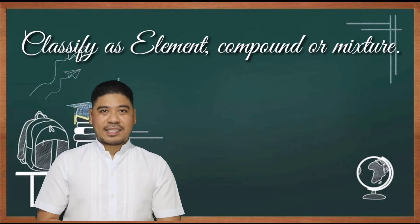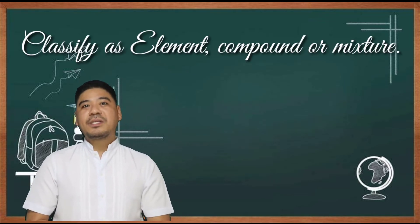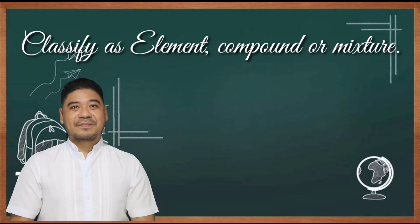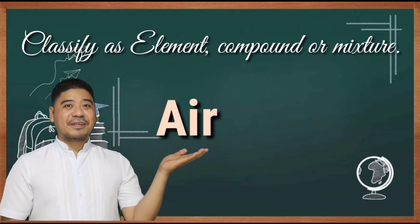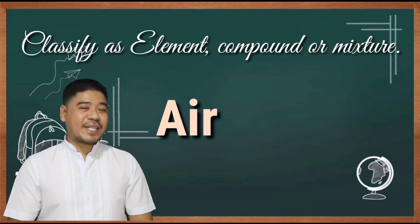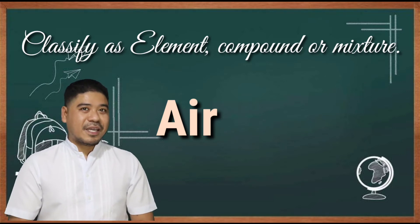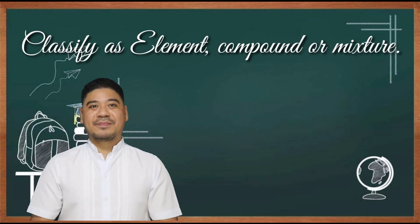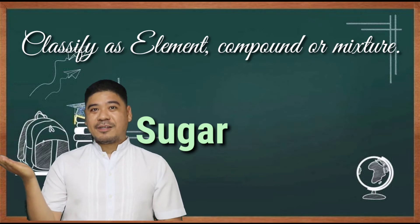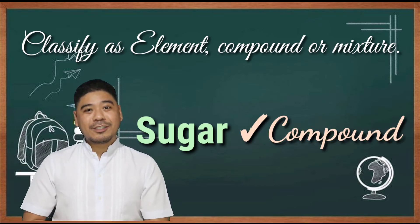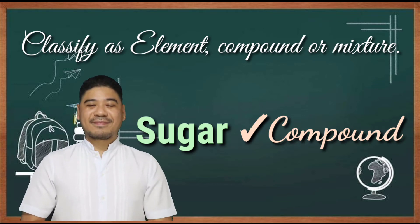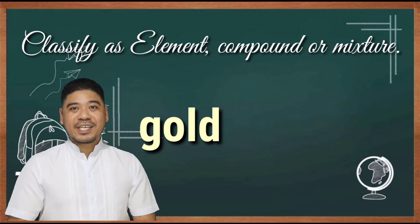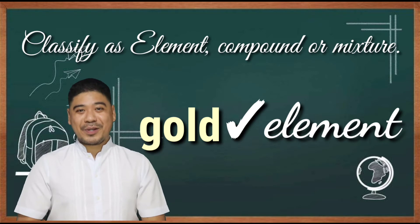Let us classify the following materials or substances as element, compound, or mixture. Air — if your answer is mixture, then you are correct. Sugar — if your answer is compound, then you are correct. Gold — if your answer is element, you are correct.